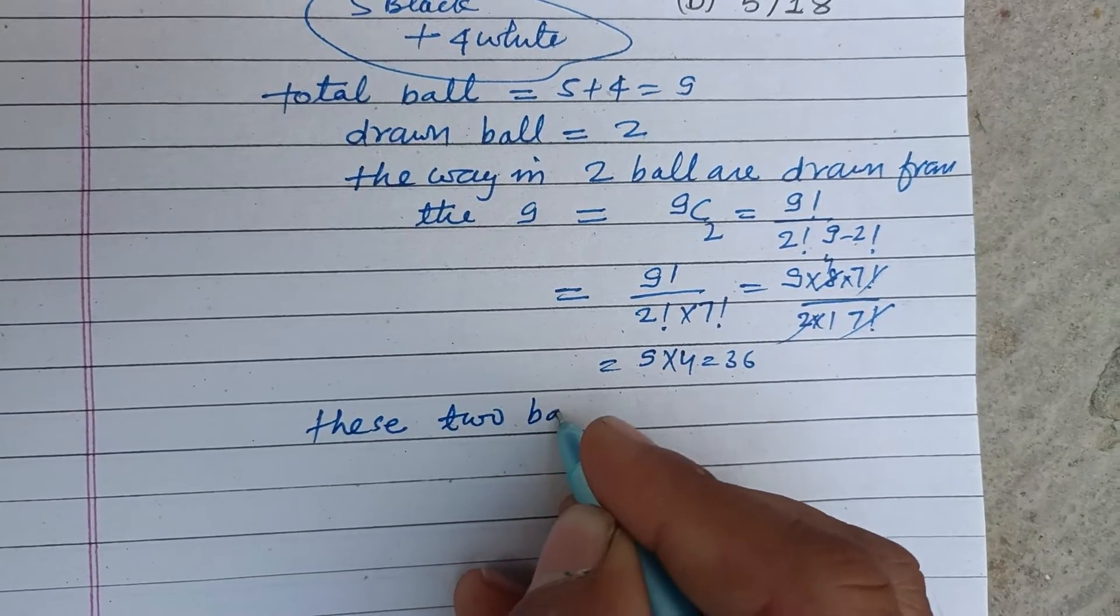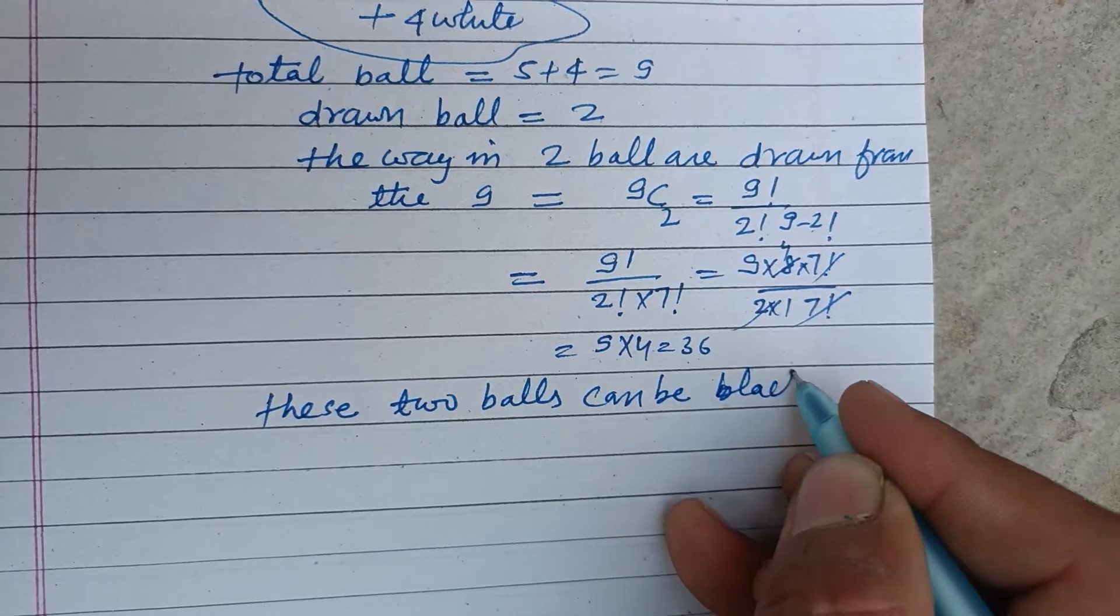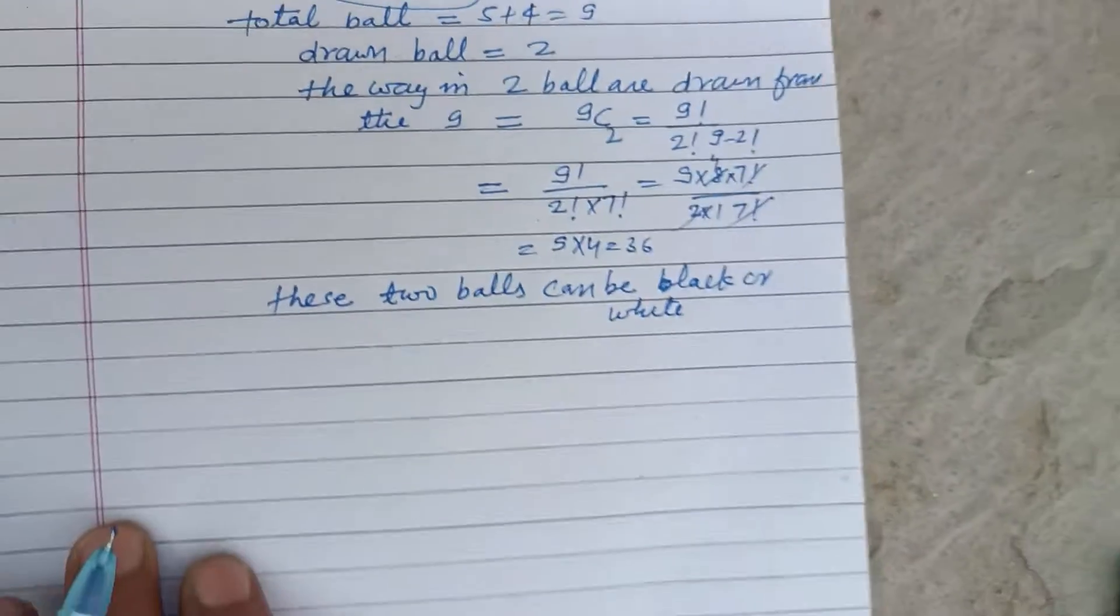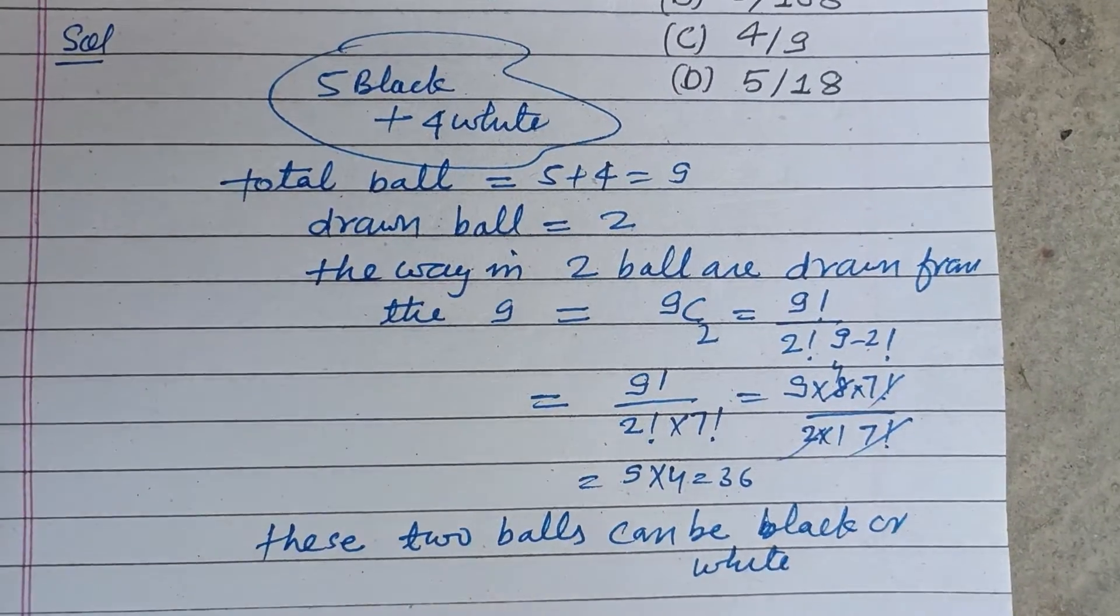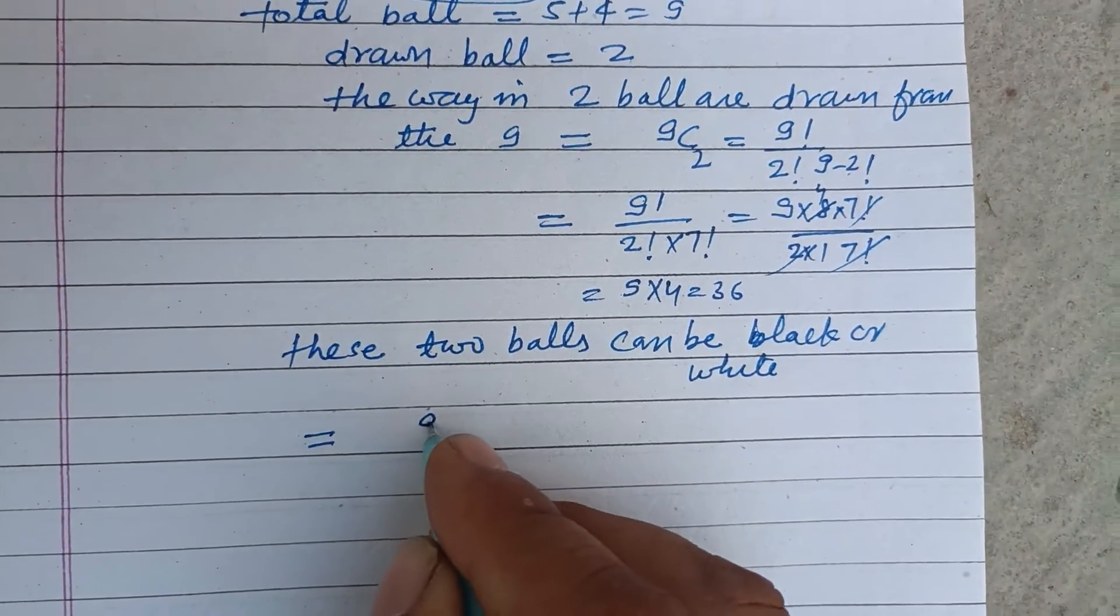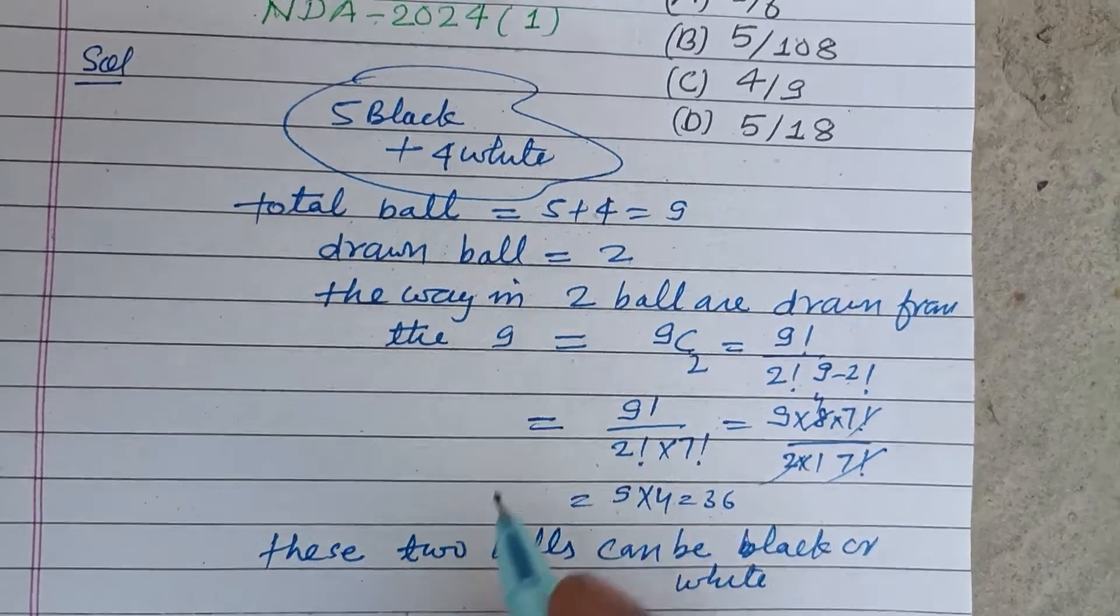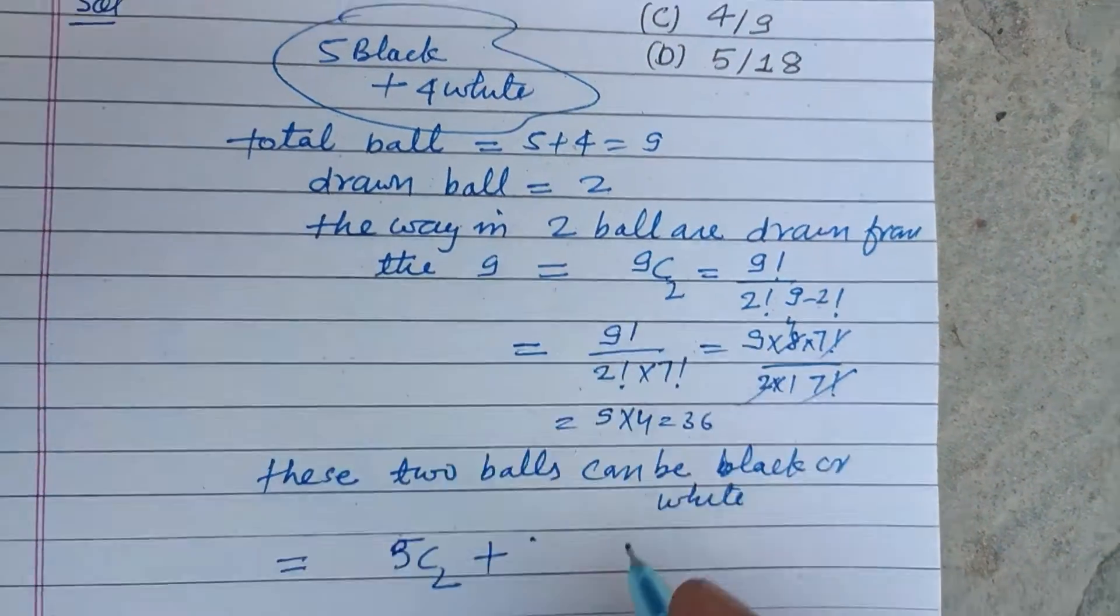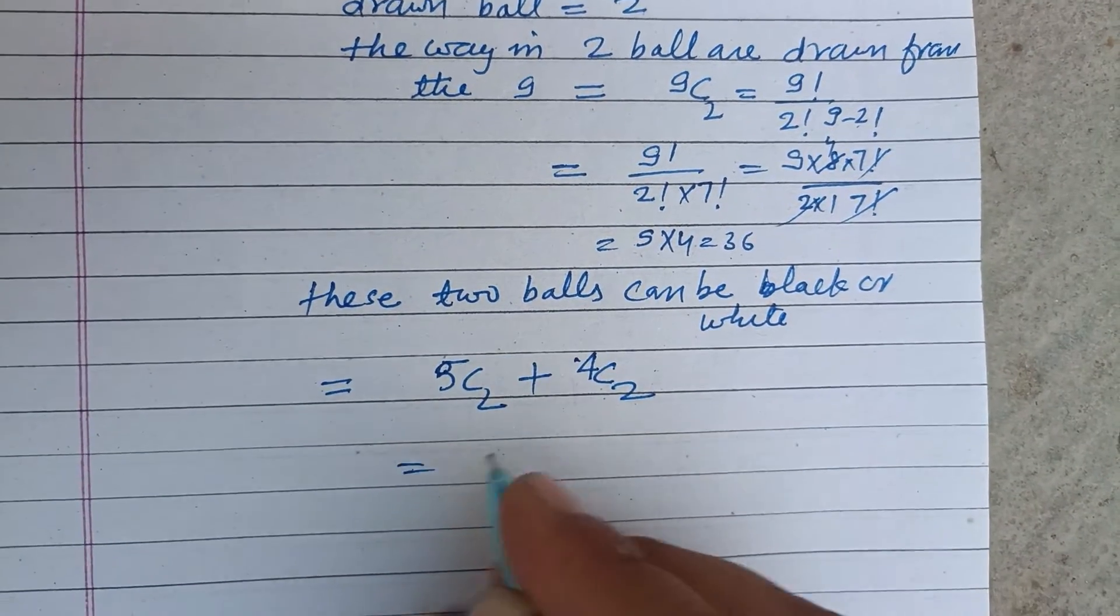These two balls can be black or white. Okay, so we want to find out the balls of same color. The probability of drawing two balls from black balls is 5C2, plus two white balls from four white balls is 4C2.